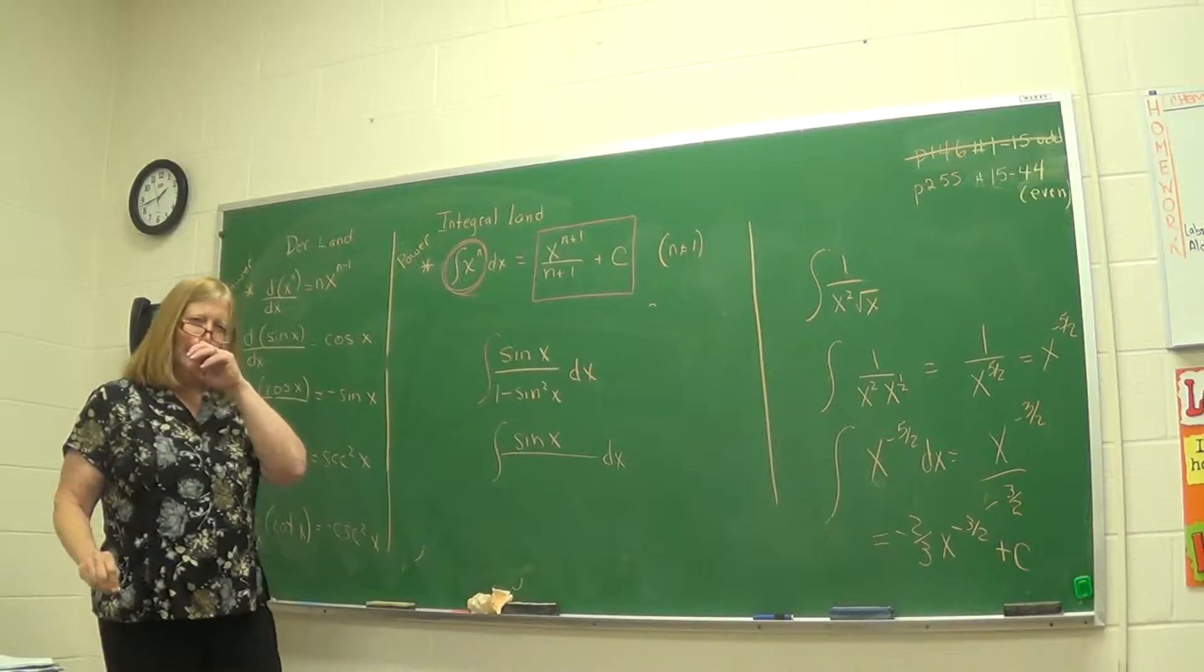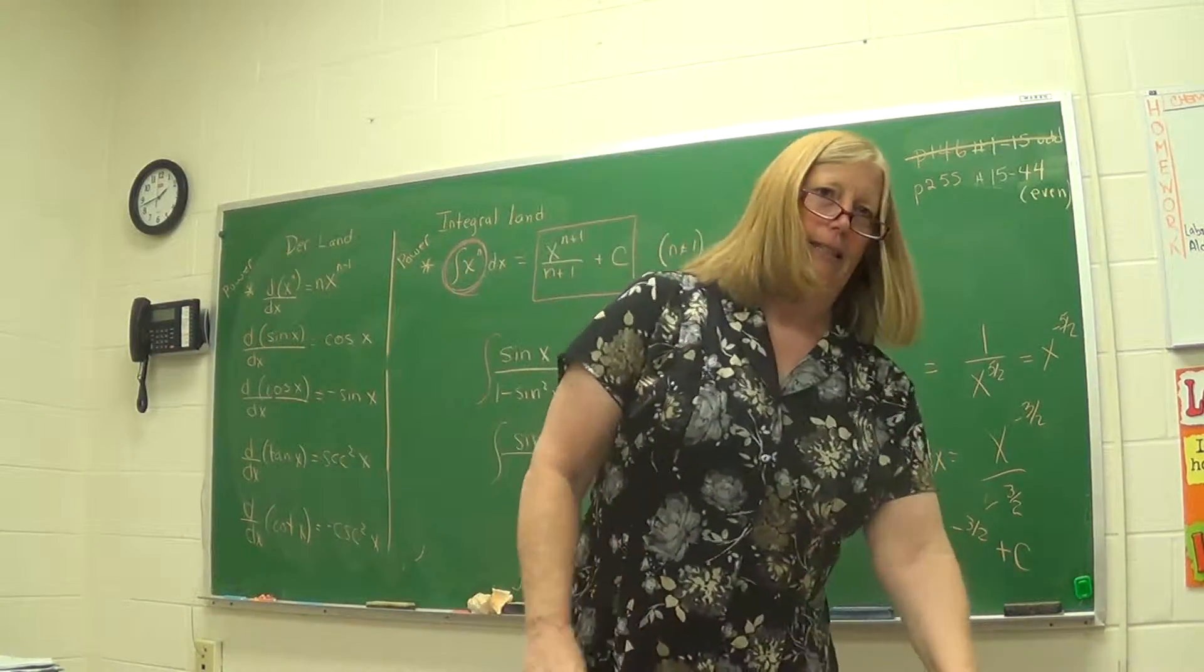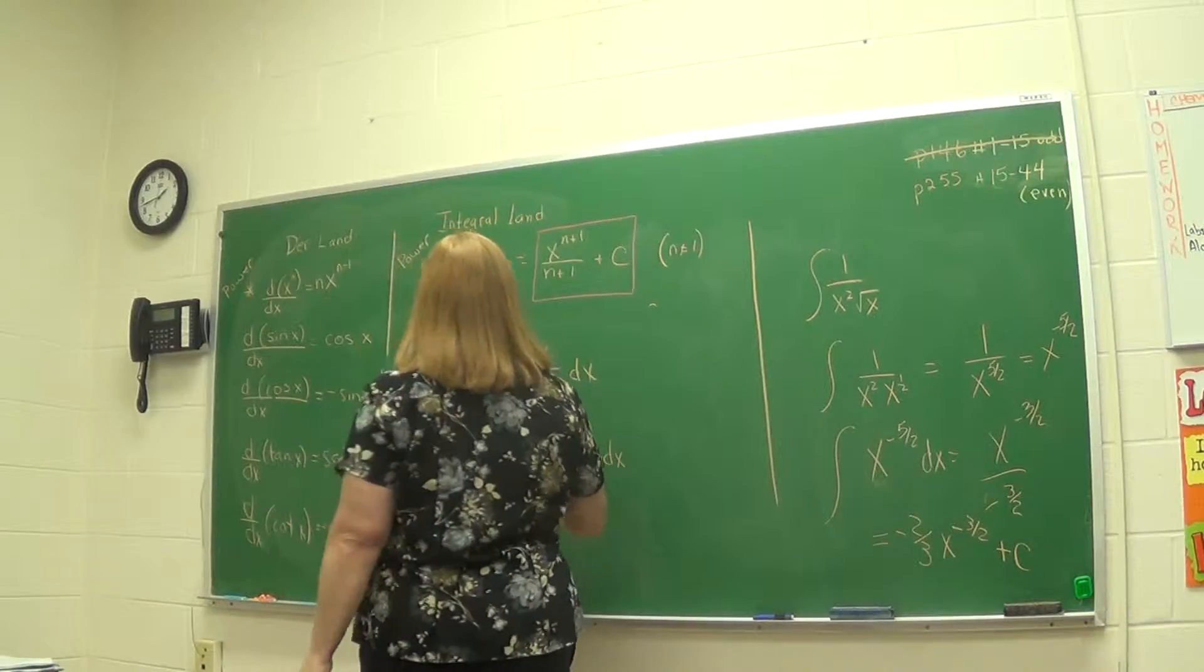Cosine squared? No, we didn't. We did secant squared. It was in the Pythagorean ID list. Is it cosine squared? Yeah. Oh, there it is. Cosine squared.